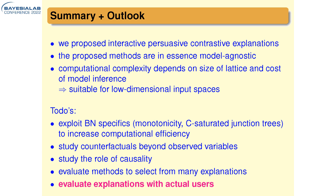We also need to look at counterfactuals beyond observed variables and study the role of causality — it may make more sense to include counterfactual explanations only for things you can actually change. For example, in the accident/insurance scenario, you could change your driving style or buy a newer car, but you cannot intervene on how long you've had your driver's license. We also need to better select from the many sufficient and counterfactual explanations, and importantly — something we do too little — evaluate the explanations with actual users.